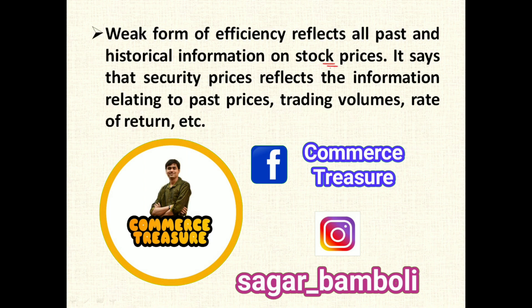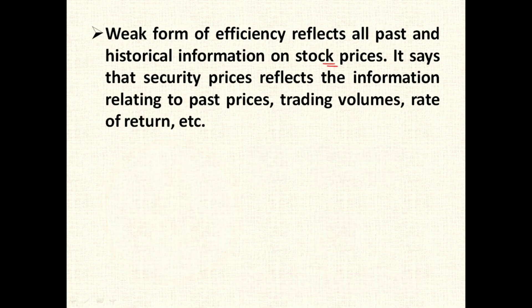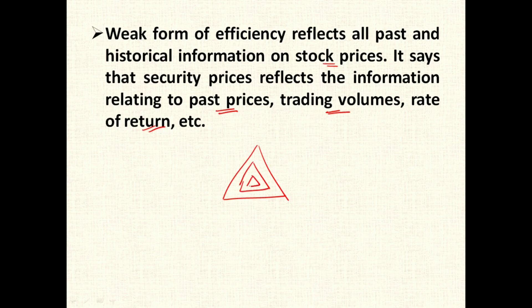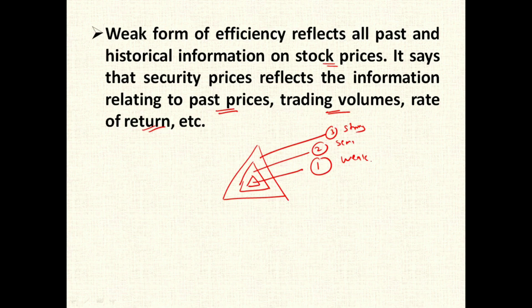Weak form of efficiency reflects all past historical information on stock prices, including past price, trading volumes, and rate of return. To summarize: weak form is based on past data; semi-strong is based on public data which also includes past data; and strong form is based on both public and private data, which also includes past data. All three forms are interlinked, with weak form as the innermost subset and strong form as the outermost layer.